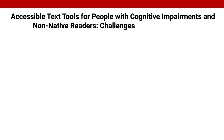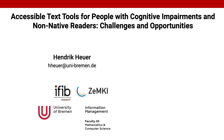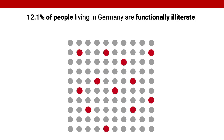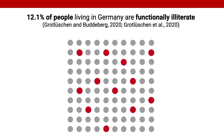Accessible text tools for people with cognitive impairments and non-native readers: challenges and opportunities. This is joint work by Hendrik Hoyer, University of Bremen, and Elena Glassman, Harvard University. The goal of our research is to support people who struggle with reading. Statistics indicate that this group of people is large. According to the 2018 LEO study, 12.1% of people living in Germany are functionally illiterate. The UNESCO considers people to be functionally illiterate if they are unable to engage in all those activities in which literacy is necessary for the effective functioning of their group and community.